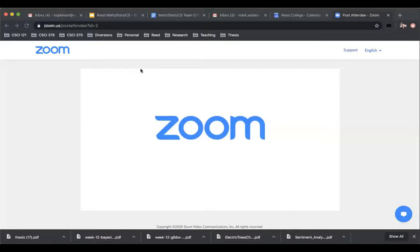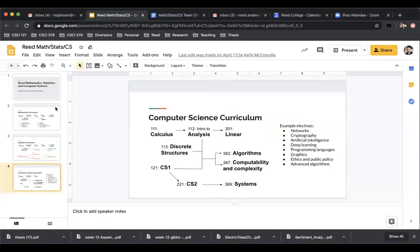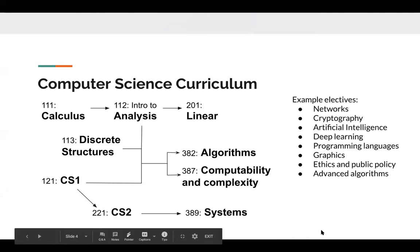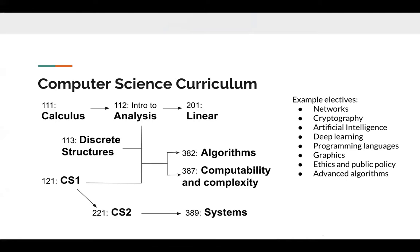I'm going to share my screen. This is a depiction of our standard course sequence for majors in computer science at Reed. You'll notice there are a lot of numbers that don't really tell you which discipline they're in. The ones at the top — calculus, analysis, and linear algebra — are all courses from our math department, as well as 113 Discrete Structures. One thing that makes Reed somewhat different from other computer science offerings, especially at liberal arts colleges, is the emphasis on math.